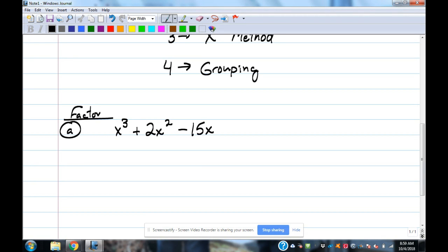Is there anything in common between all three? There's no numbers, but there's an x. Everybody's got how many x's? One in common, at least one, and that's the GCF. This one has three x's, this one has two x's, this one has one, they all share one.